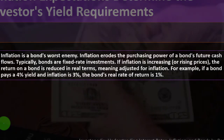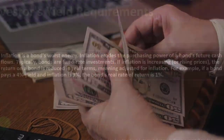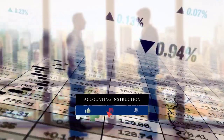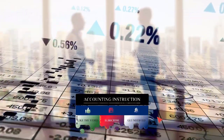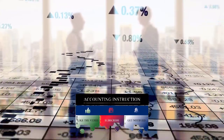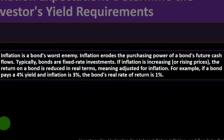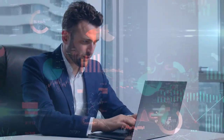For example, if a bond pays a 4% yield and inflation is 3%, the bond's real rate of return is only 1%. If inflation equals the yield, you're losing purchasing power in real terms. That said, bonds can still serve as a hedge against equities — if there's a recession, stocks could drop dramatically, whereas bonds provide more stability within a diversified portfolio.